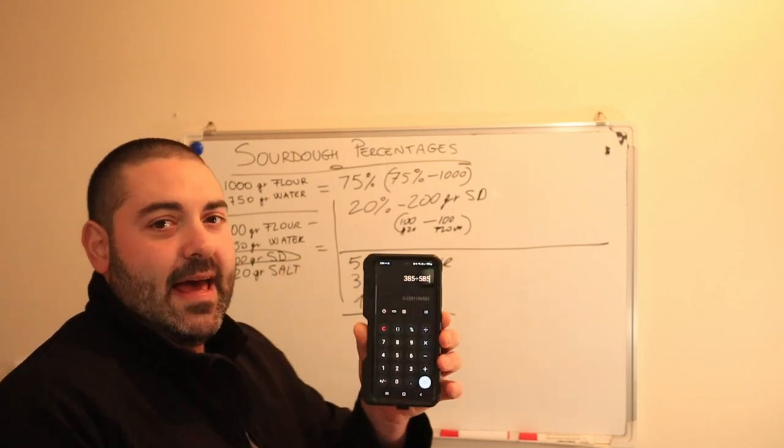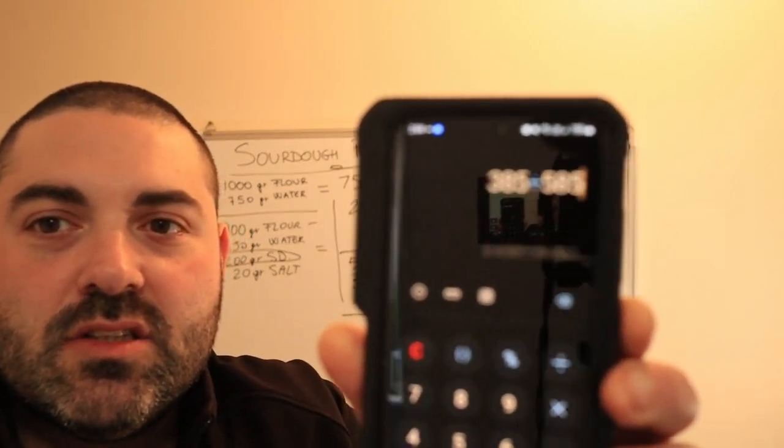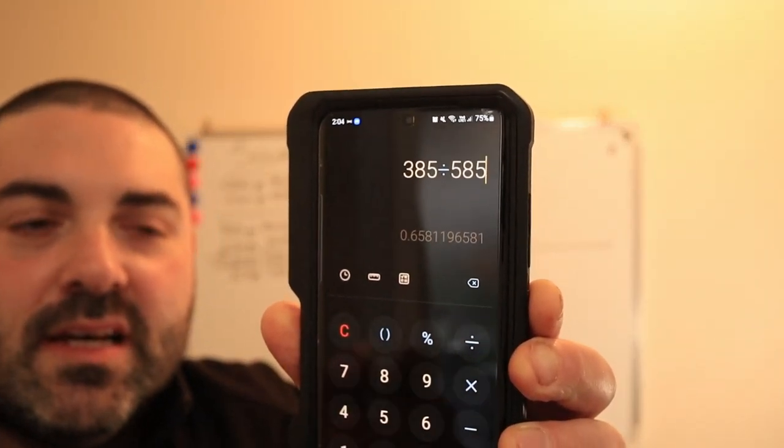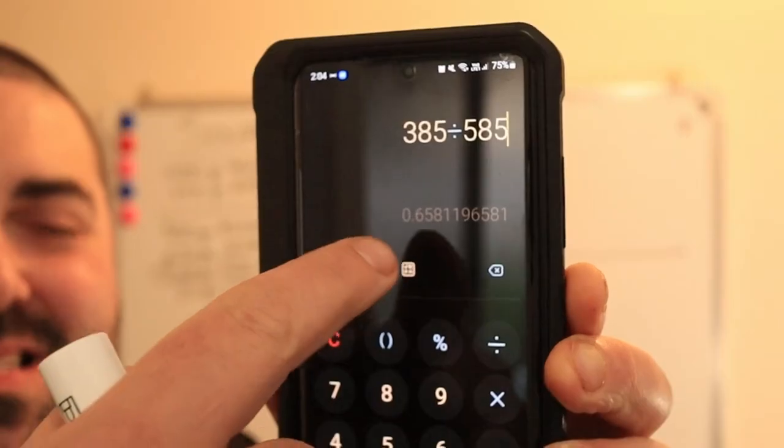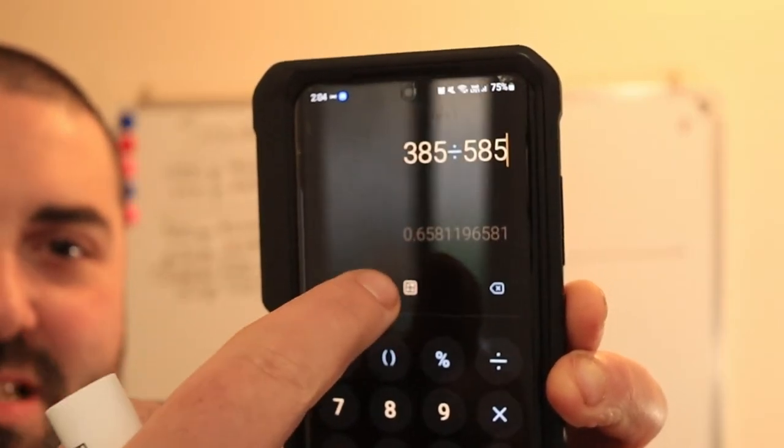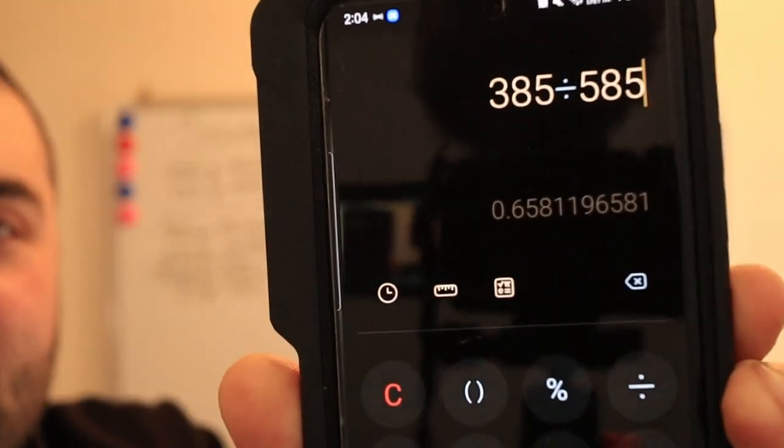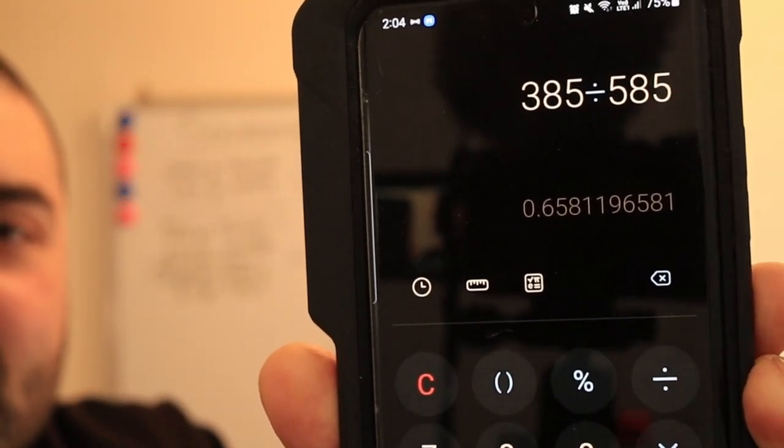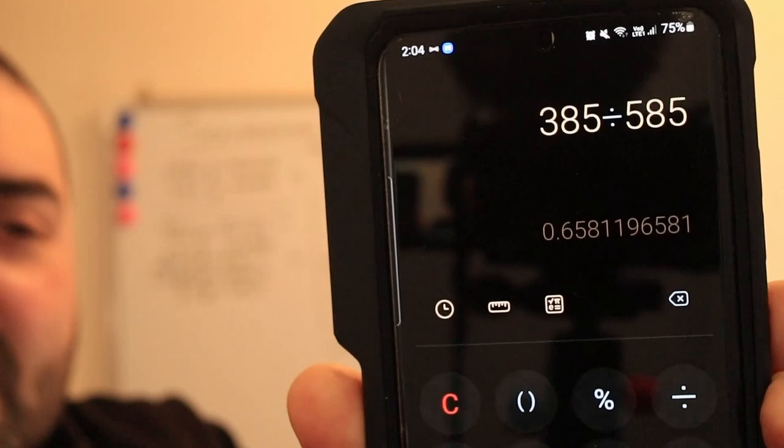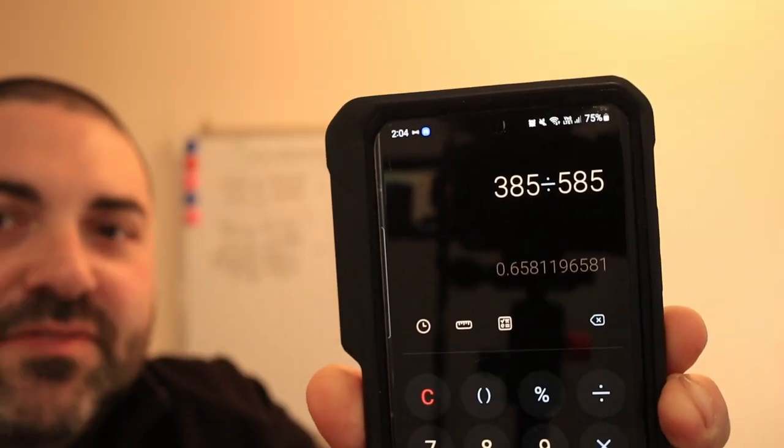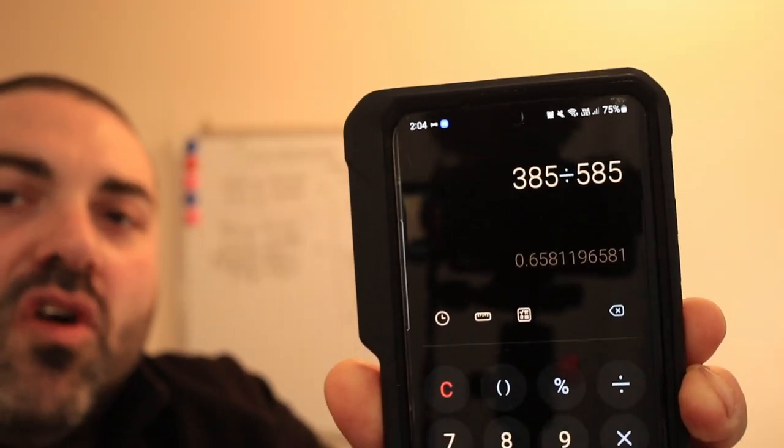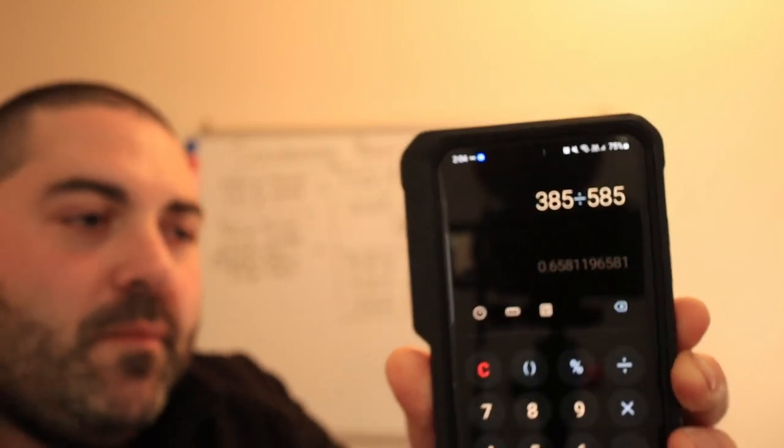And I will find out, as you can see, the amount of percentage of water that's in the recipe. And this one equals to 65%, you can see, 65%. Okay? That 0.65 means that we have a 65% of water into the dough.